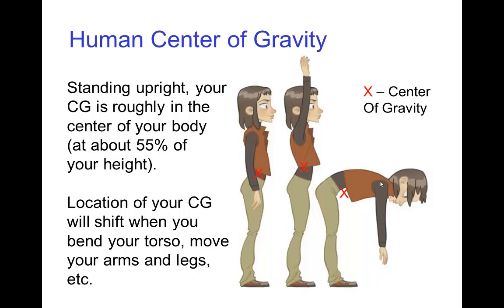Now for humans, our center of gravity is roughly located in the center of our body, approximately where your belly button is and typically inside your torso. But it's not an exact fixed position in your body because your body is not a fixed shape. You can bend your torso, you can move your arms and legs. And when you change your shape, the location of your center of gravity shifts.